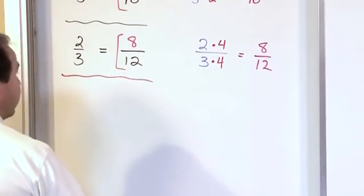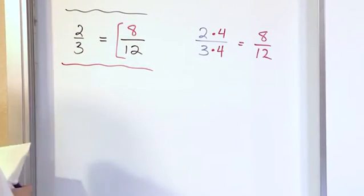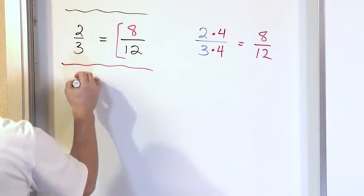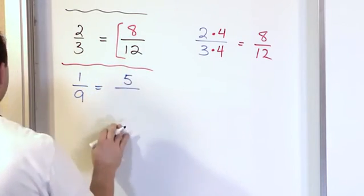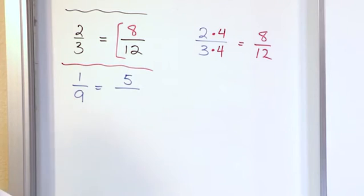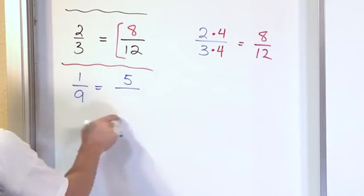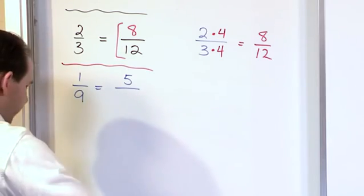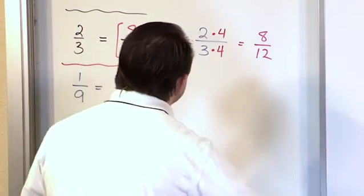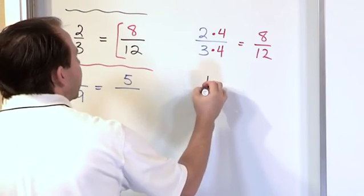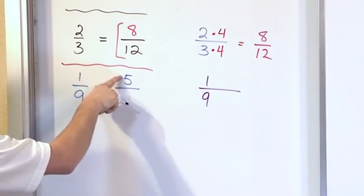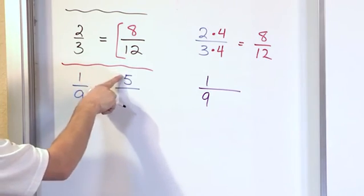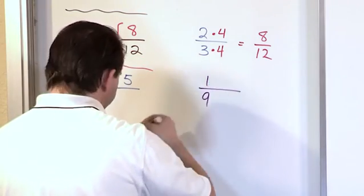So let's go on and move into another one. Let's say I have 1 ninth, and I'm claiming that it's equal to a fraction with a 5 on the top. I'm trying to figure out what would be on the bottom there. What number would be on the bottom to make these two fractions equal? So the best way to proceed is you start with your 1 ninth, and you look at it and say, I'm trying to get to 5 on the top. What do I have to multiply here to give me a 5? Well, I'll need to multiply...